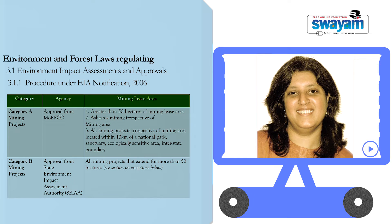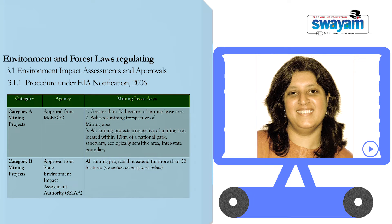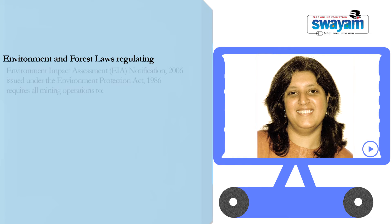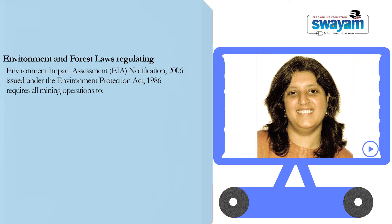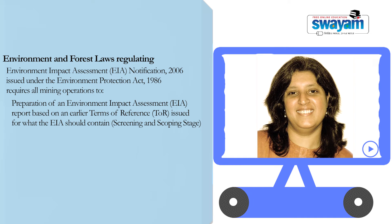It is important to know where you actually locate mining operations and how to track the approval — whether you are applying for a mining approval or want to check if a mine operation around you is operating with or without an approval. The EIA Notification requires all mining operations to follow at least four stages. The first two stages relate to the preparation of the Environment Impact Assessment Report based on a Terms of Reference granted to the mine. Followed by the EIA, any mining project needs to go through a public consultation phase, a significant component of which is a public hearing.